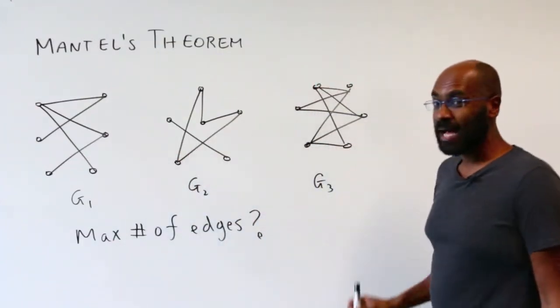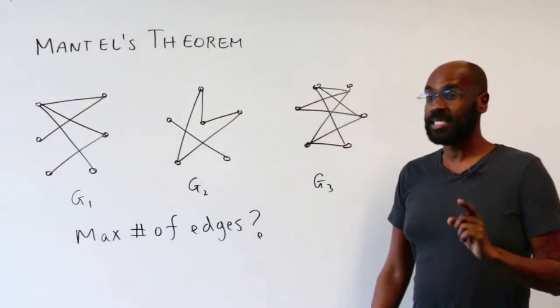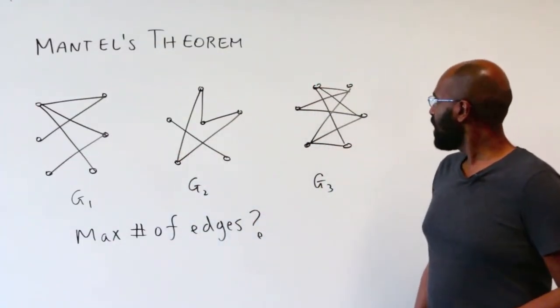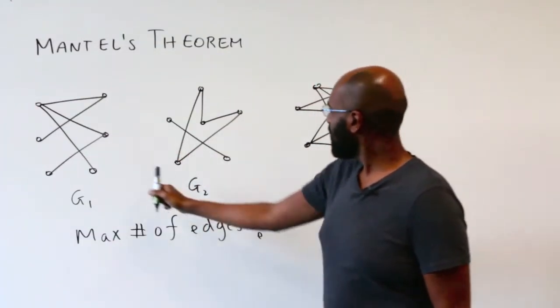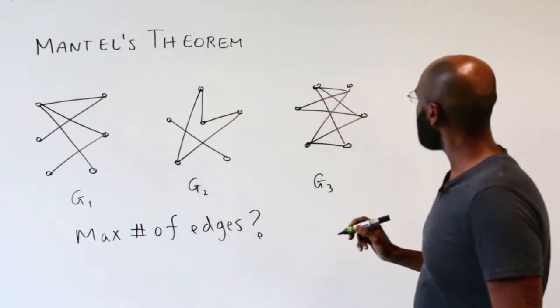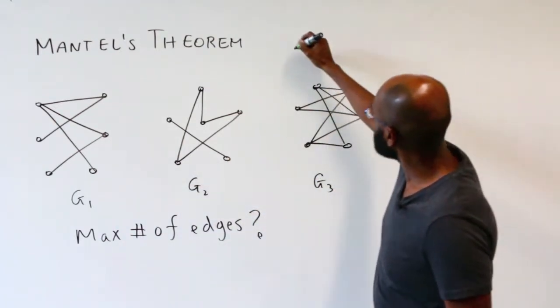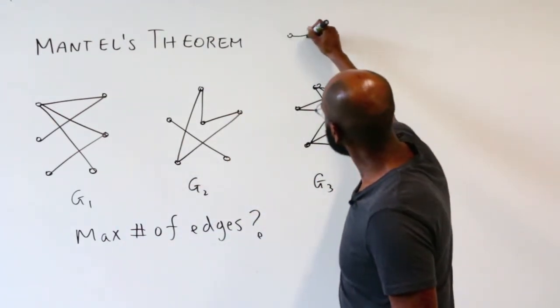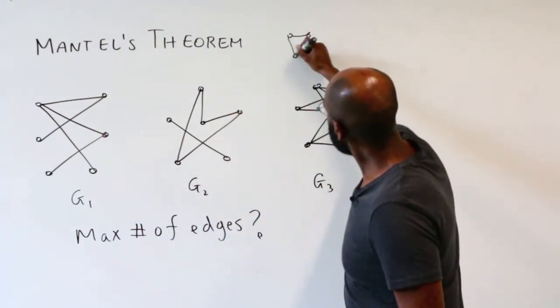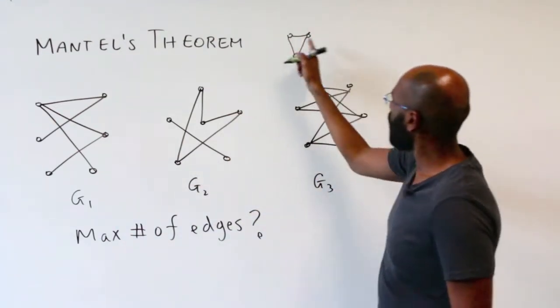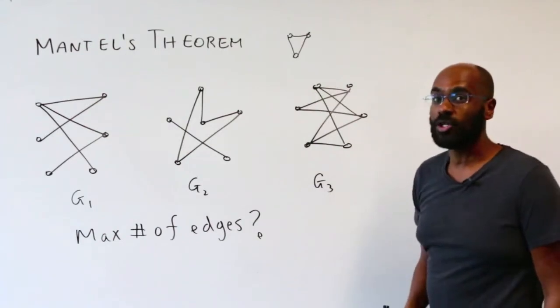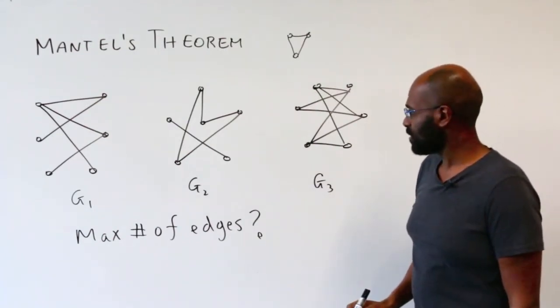Here are three different graphs, each on six vertices, and you notice that none of them have the following as a substructure: three vertices, each pair of which are adjacent.